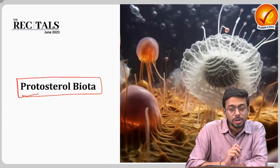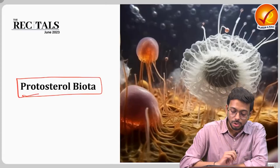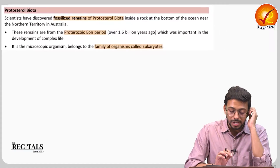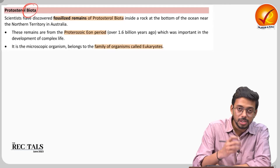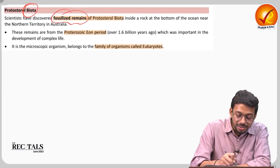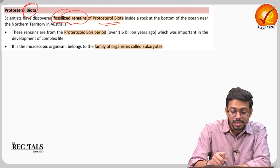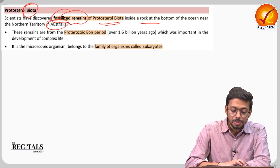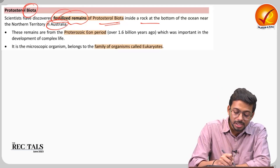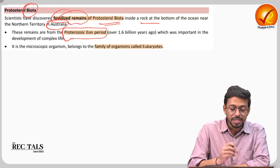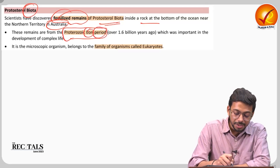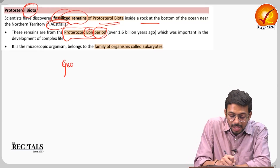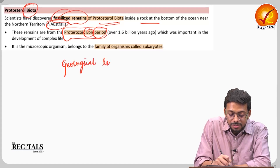Protosterol biota is a very important topic from the perspective of biotechnology and the evolution of human life. Scientists have discovered fossilized remains of this particular organism inside rock at the bottom of an ocean near Australia. We'll discuss various things including the proterozoic aeon period — what is an aeon, what are periods, and how the geological time scale is divided.